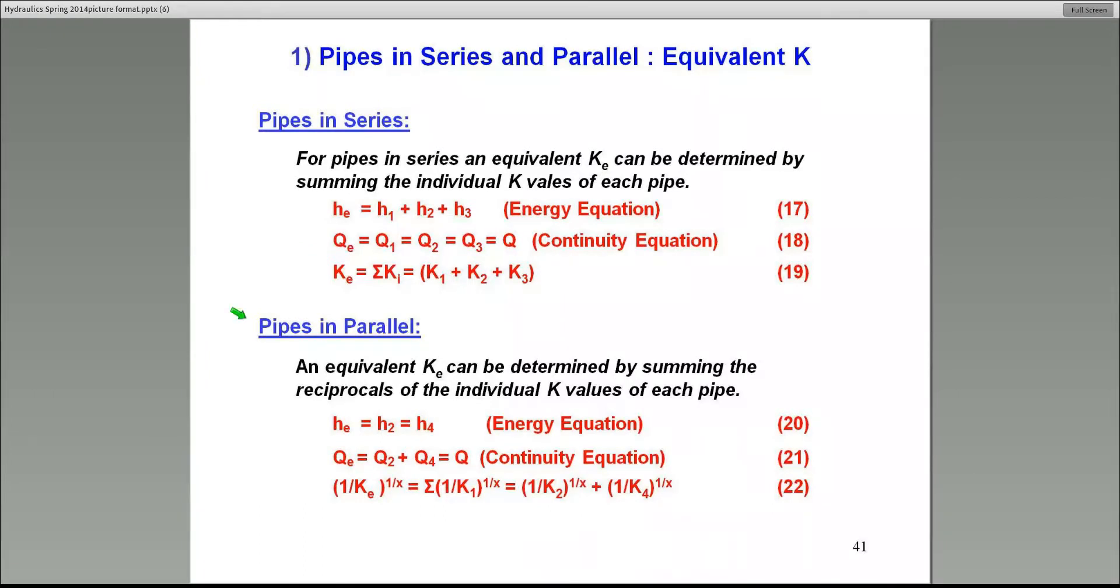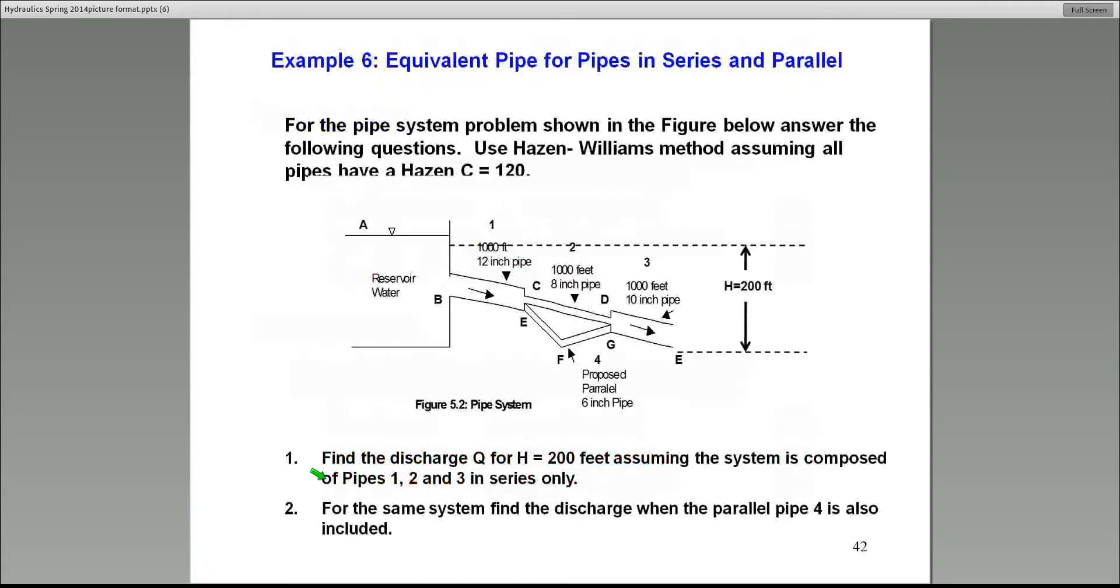For pipes in parallel, the head loss is constant across the parallel pipes, but the Qs get split up, and that leads to this equation, number 22. So if you want to take two parallel pipes and combine them, the equivalent pipe, one over K_E is computed using the reciprocals as shown here in equation 22. I'll illustrate both these two in my example how to calculate the equivalent K_E for these pipe systems.